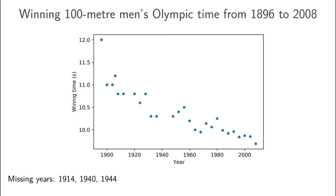The figure on this slide shows the Olympic winning times for the men's 100 meter dash from 1896 to 2008. If you look closely, you'll see that the data is actually missing for the years 1914, 1940, and 1944 — and you can maybe guess why that's the case. So given the data that we do have, could we actually predict the winning times for these missing years?